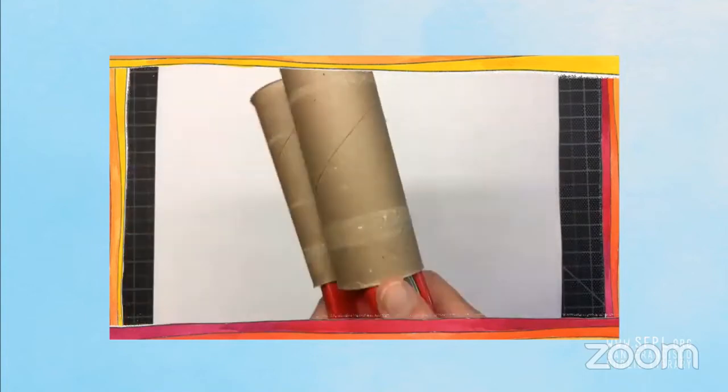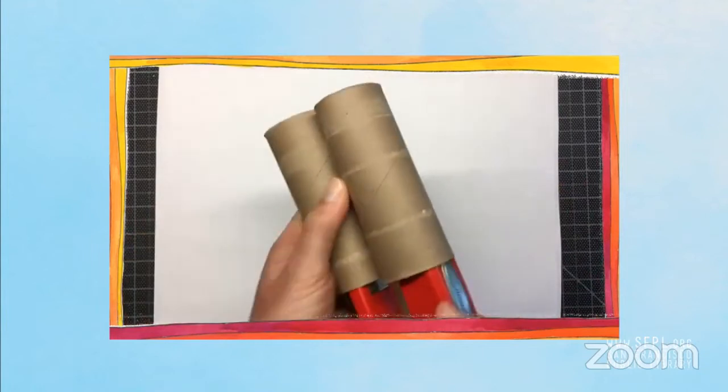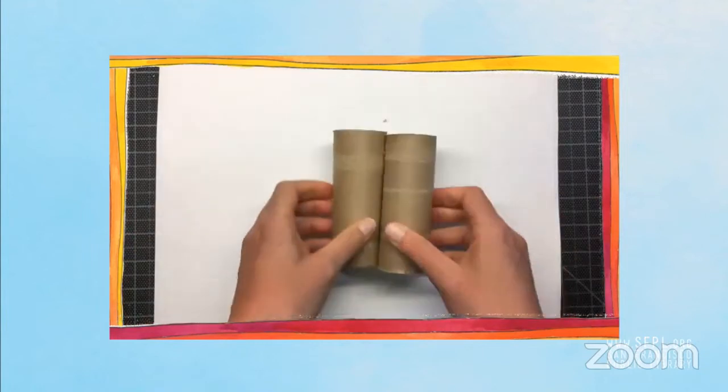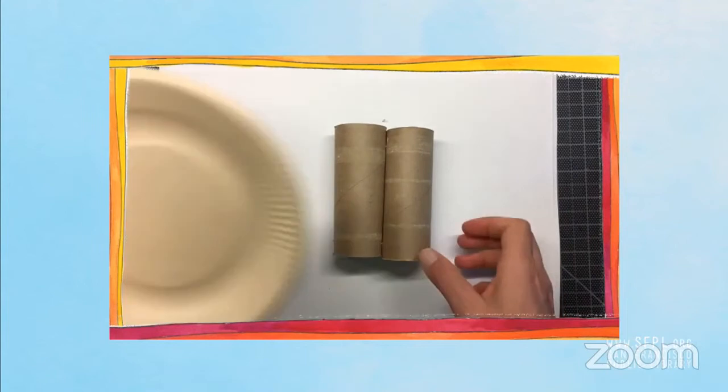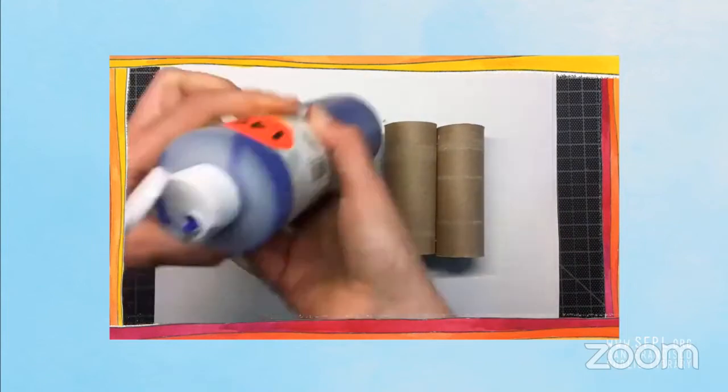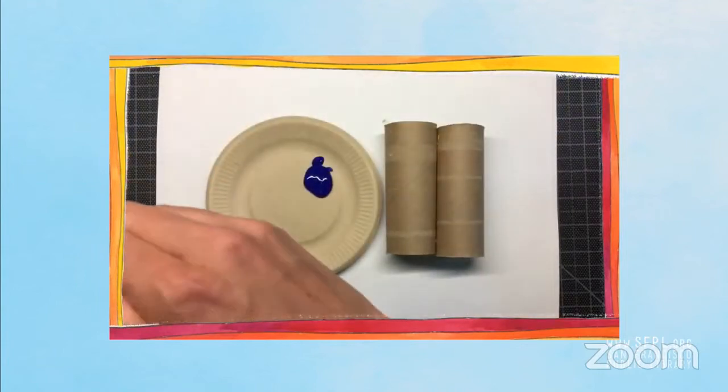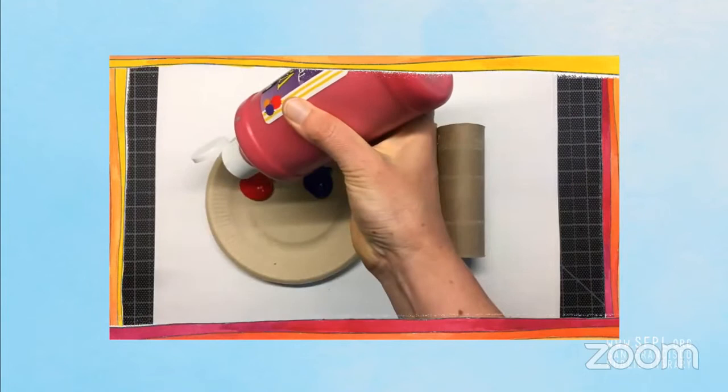Staple your toilet paper rolls together. And grab a piece of paper or a paper plate, something to put your paint out on. I'm using blue and red.